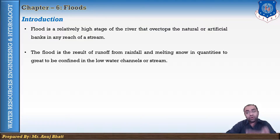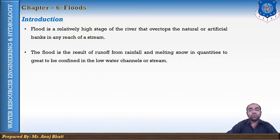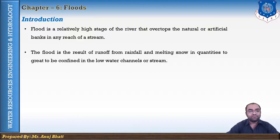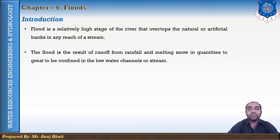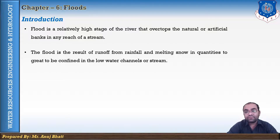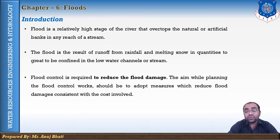A flood is also a result of runoff from rainfall and melting of snow in quantities too great to be confined in the low water channel. When the banks are overtopped, water is spread over the flood plain, causing damage to crops or properties within the flood plain. Sometimes flood may also result in a loss of animals and human life.